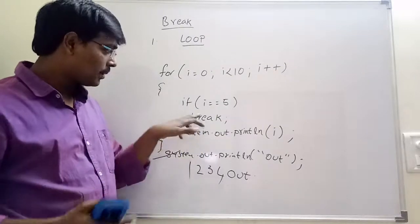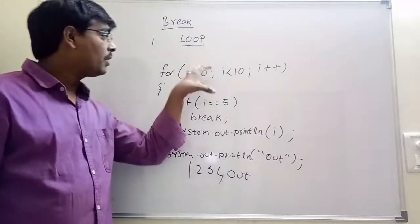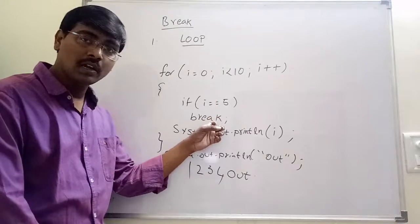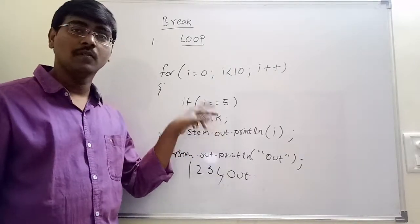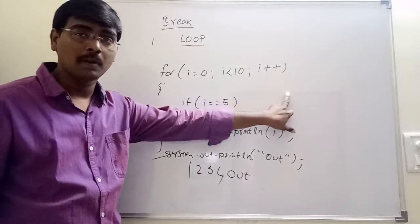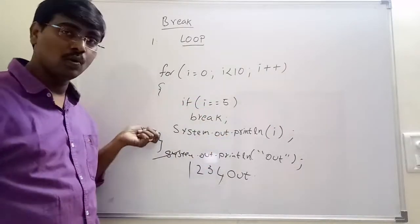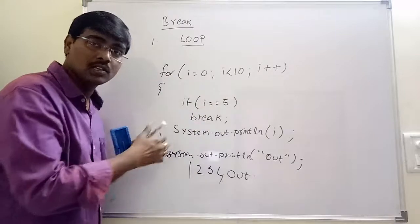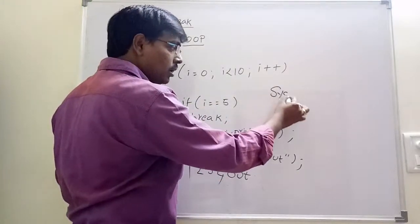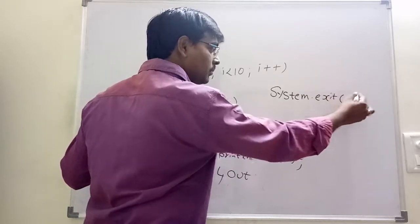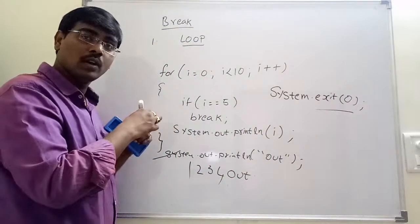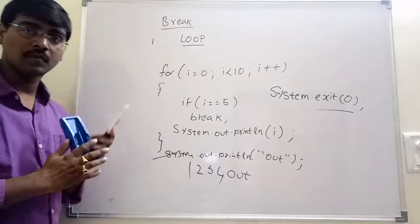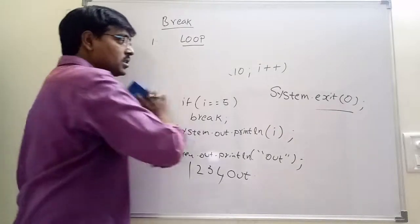When i becomes 5, 5 less than 10 is true, and 5 equals 5 executes the break statement, which means we come out of the loop. So after exiting the loop, the remaining elements 5 to 10 are not executed. For nested loops, break only exits the inner loop. If you want to exit the entire program based on some condition, you use System.exit(). Break exits the loop; System.exit() exits the program.